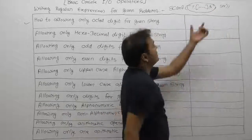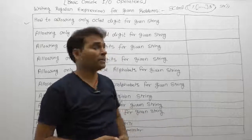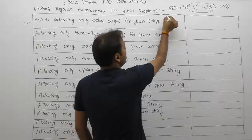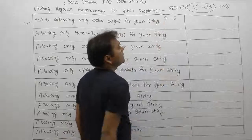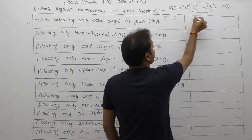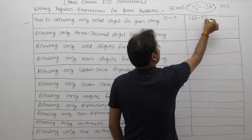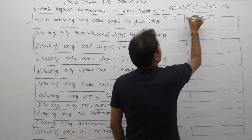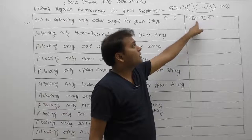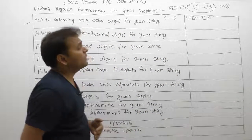Octal digits are only from 0 to 7. So the regular expression is simply: percent, then square bracket, 0 to 7, closing square bracket, then 's', inside double quotes. This reads only octal digits in the range from 0 to 7.